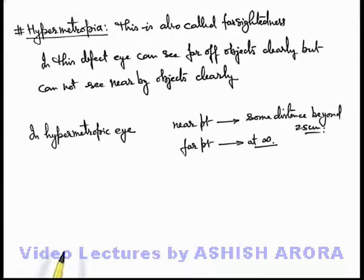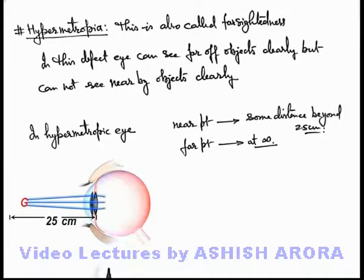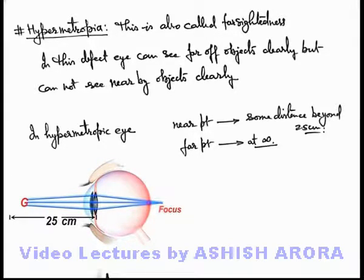Let's have a look at this situation which explains how a hypermetropic eye behaves. When a nearby object is placed at some distance from a hypermetropic eye, the light rays entering the eye converge at a point behind the retina. Whereas in a normal eye these rays are focused at the retina producing a clear image, in a hypermetropic eye the image is produced behind the retina, so the image seen is not clear.